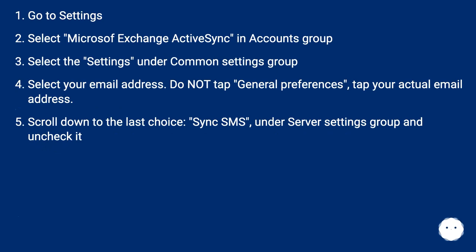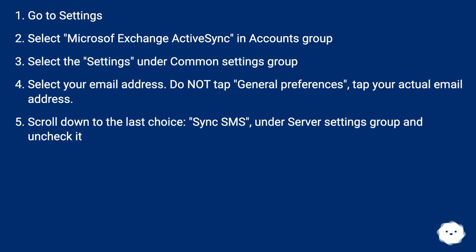Or, go to Settings. Select Microsoft Exchange ActiveSync in the Accounts group. Select Settings under the Common Settings group. Select your email address — do not tap General Preferences, tap your actual email address. Scroll down to the last choice, Sync SMS, under the Server Settings group and uncheck it.